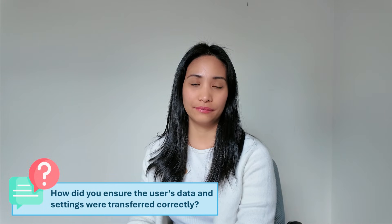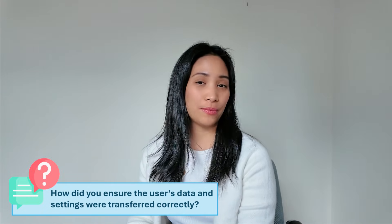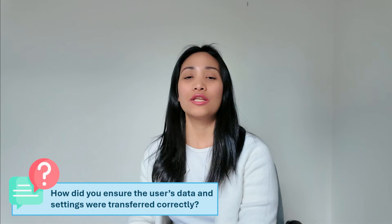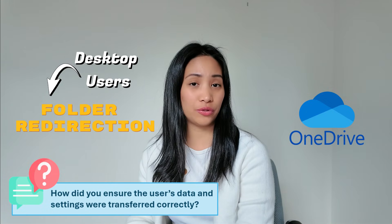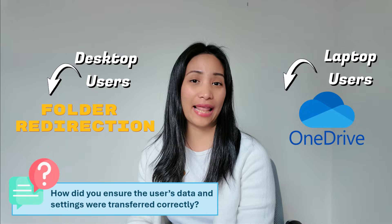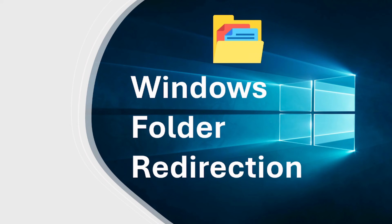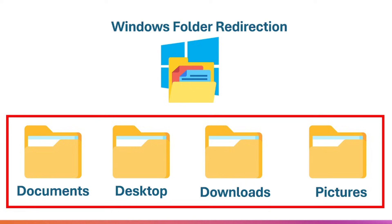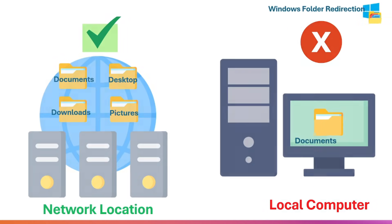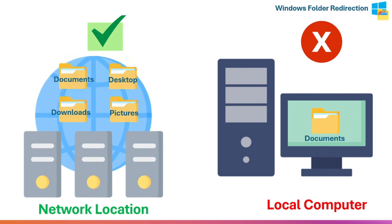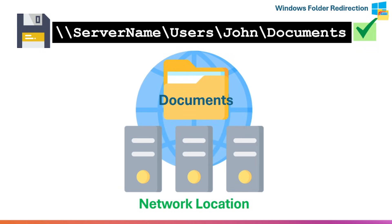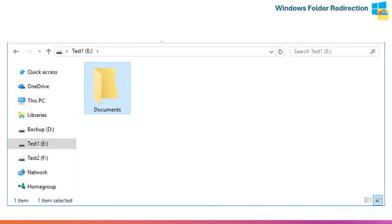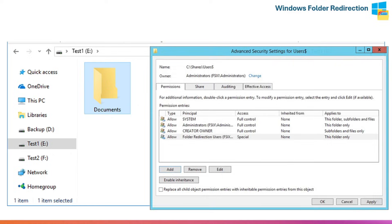User data is the most important concern during migrations like this. We used folder redirection for desktop users and OneDrive for laptop users to back up and sync their data. Folder redirection is a Windows feature that lets administrators store user folders — like Documents, Desktop, Downloads, and Pictures — on a network location instead of locally. So instead of files being saved on the user's computer, they're stored on a file server, but to the user it still looks like their normal folders — just redirected behind the scenes.